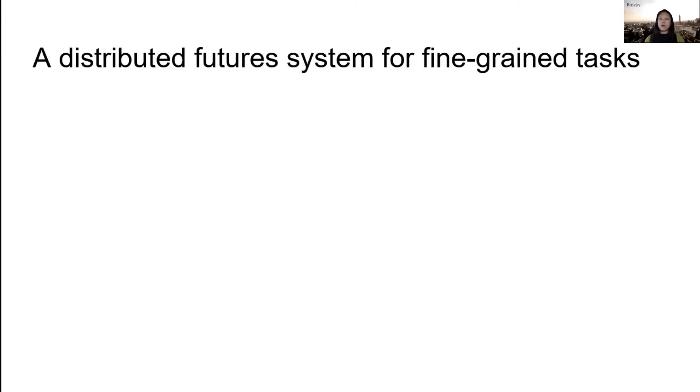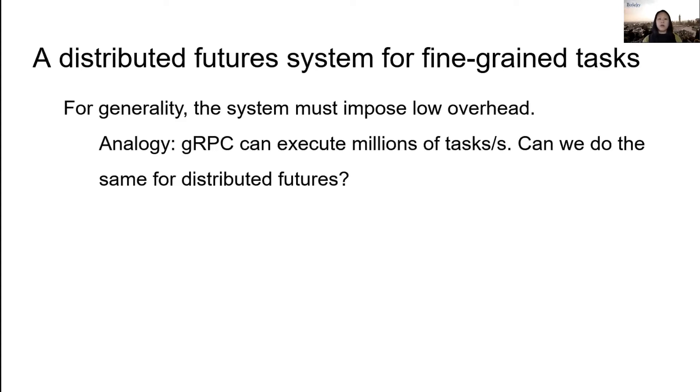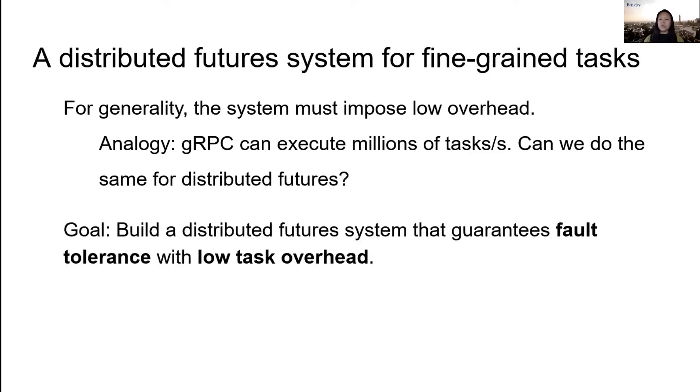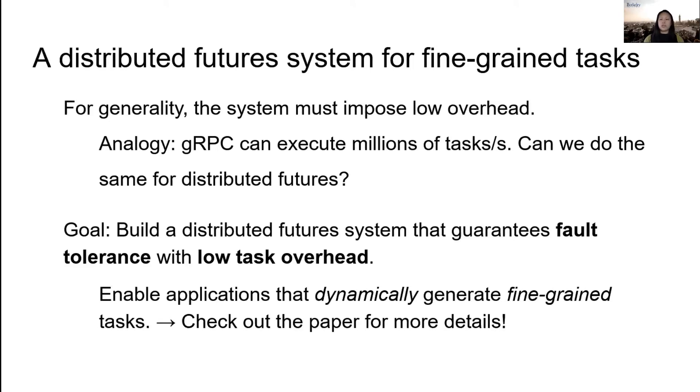The goal of this work is to design a distributed futures system that can efficiently support fine-grained tasks that run in milliseconds instead of seconds. The reason is for generality. As an analogy, we can look again to the RPC model. For example, the popular framework gRPC is practical for so many applications because of its low overhead and its ability to execute millions of tasks per second. The question that we study here is whether we can do the same for distributed futures and how we can still achieve fault tolerance. By doing so, we can enable new applications of distributed futures, such as in video processing and model serving.